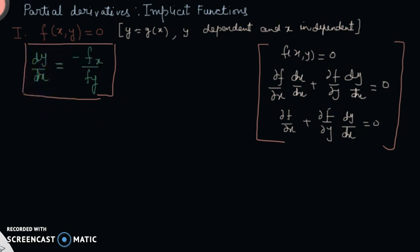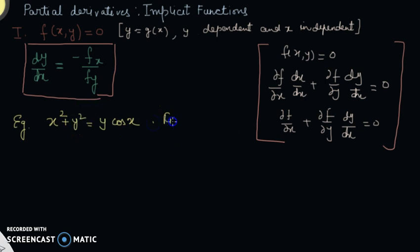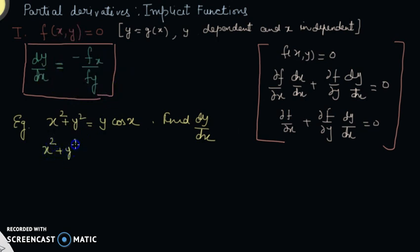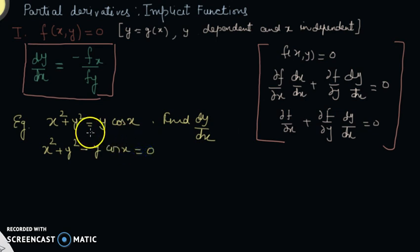Let's take one example to see how to calculate. Here I take an implicit relation: x squared plus y squared equals y times cos(x). This is an implicit relation where we cannot write y explicitly, and we want to find dy/dx. First, we write it in standard form: transfer y·cos(x) to the left side, giving x² + y² − y·cos(x) = 0. All variables should be on one side before finding dy/dx.